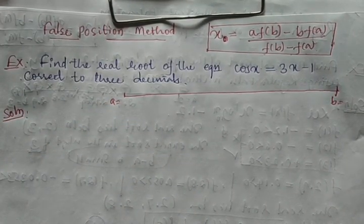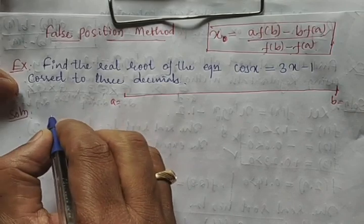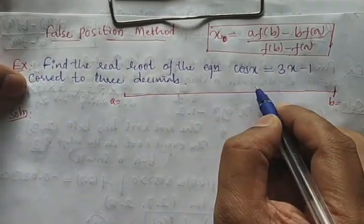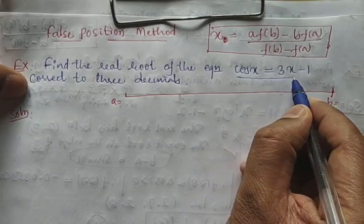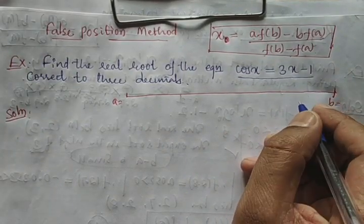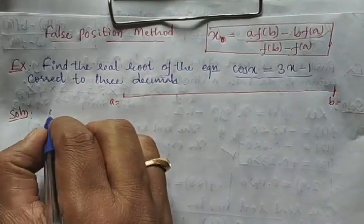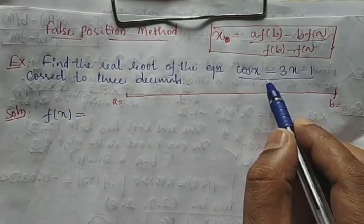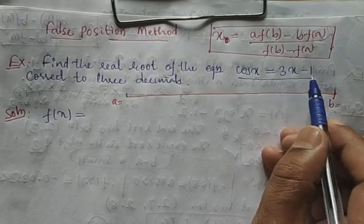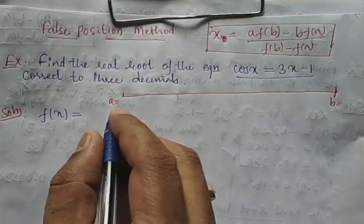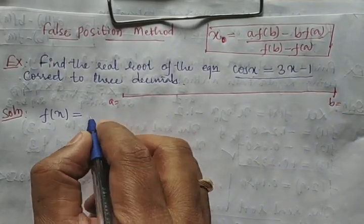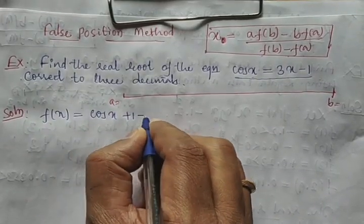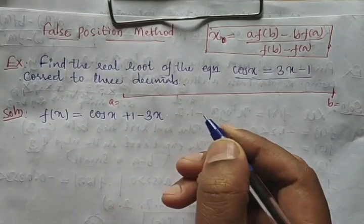The given function is cos x + cos x = 3x − 1. When we rewrite it as f(x) = 0, we get f(x) = cos x + 1 − 3x = 0.